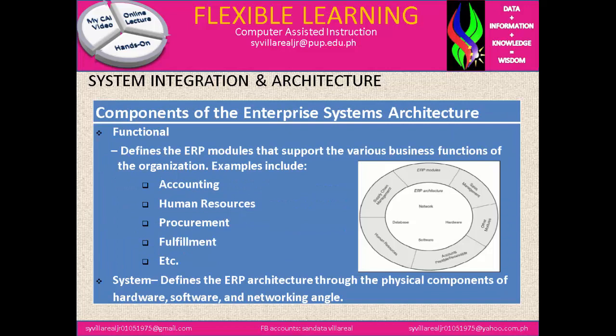We have the components of the Enterprise System Architecture, ESA. The functional component defines the ERP module that supports the various business functions of the organization. Examples include accounting, human resource, procurement, fulfillment, etc. The second is the system, which defines the ERP architecture through the physical components of hardware, software, and networking.